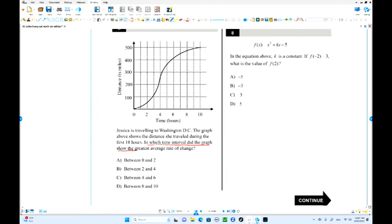Number 6. Which interval shows the greatest average rate of change? Average rate of change is when you make a line, which is a secant. The slope of that secant is called average rate of change. 0 and 2, 2 and 4 is a little steep. 4 and 6 from here to here, but still 2 and 4 is more steep. 8 and 10 is lower. So choice B is the answer.